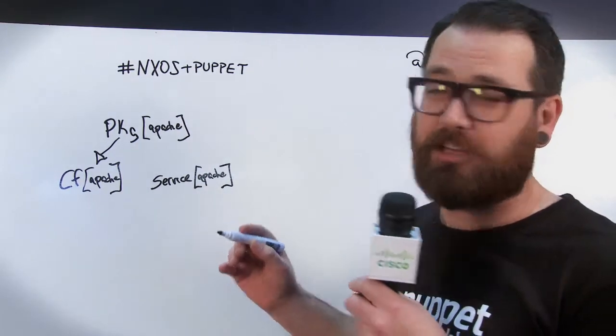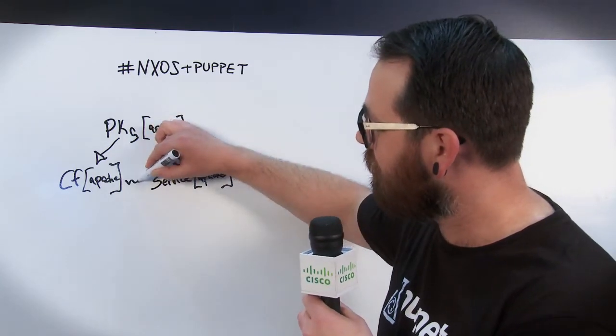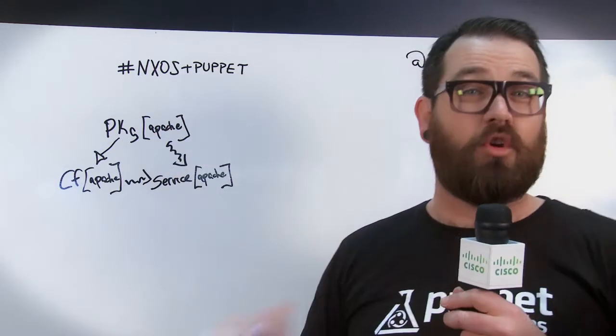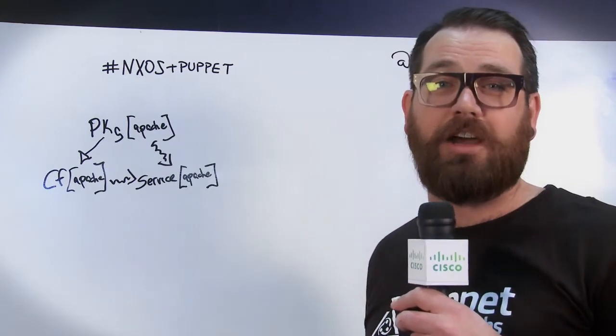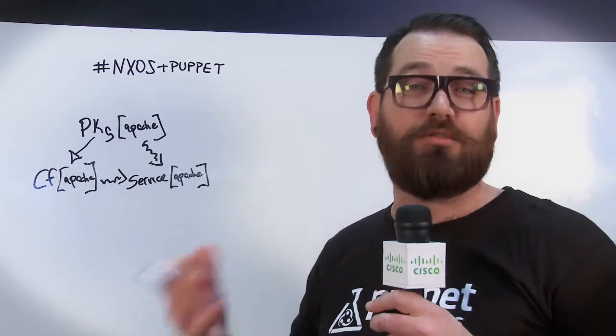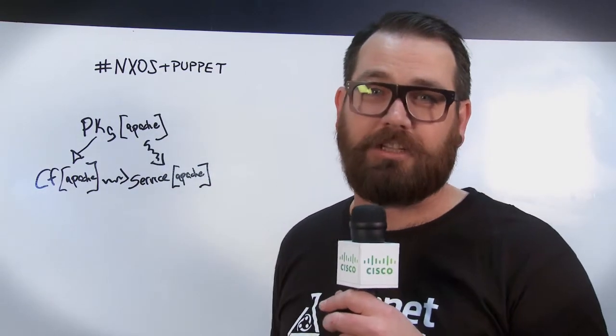This squiggly line I'm using here represents notifications. If the package changes or the config file changes, the service will get notified and automatically bounce. So in production, you know that when you push out a new config file, the service is automatically going to get restarted.